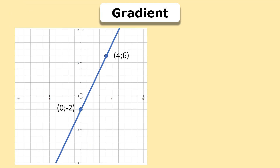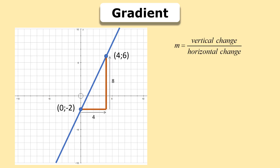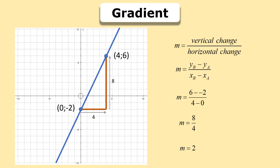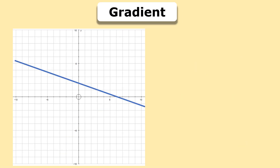Let's practice with two points. The coordinates are (0, −2) and (4, 6). Step 1: write down the formula — vertical change divided by horizontal change — which means we calculate 6 minus (−2) over 4 minus 0. Remember, always subtract the Y values first. That gives 8 divided by 4, so the gradient is 2, which is positive — it slopes up to the right. If you started with −2 minus 6 over 0 minus 4, the answer is still 2, a positive gradient.